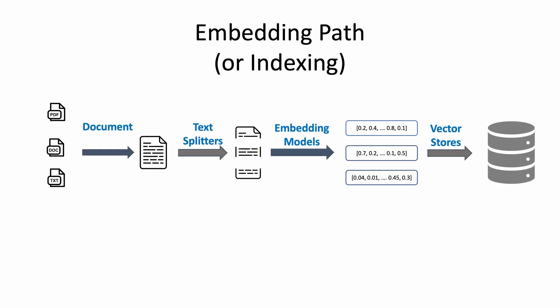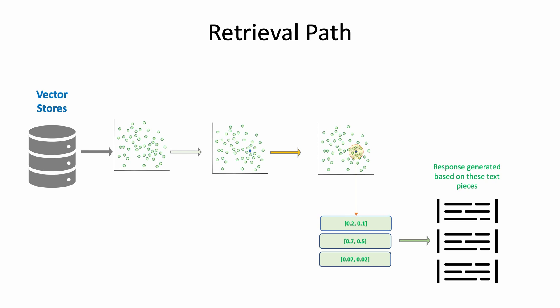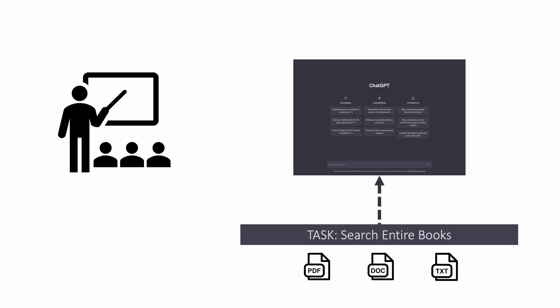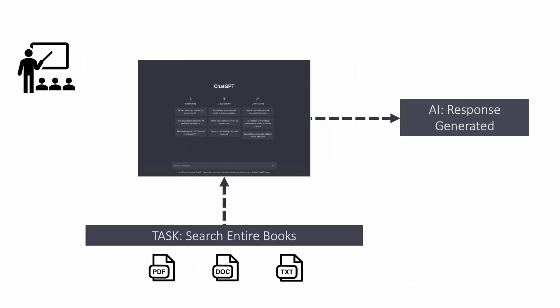So essentially now we can take any of the document and store it in vector stores. And when we get a question, we can retrieve the answer and then generate a response, which means that our students can now search through entire books and get response back from our chat application using the retrieval QA chain.